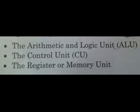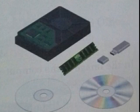The third part is the register or memory unit. It stores all the data that is to be processed. This helps the ALU to access all the data it needs to perform calculations. The memory unit is also called the internal memory of a computer. It is used to store data and instructions temporarily. If we want to store a large amount of data permanently, then we use a hard disk, which is the most popular storage device.